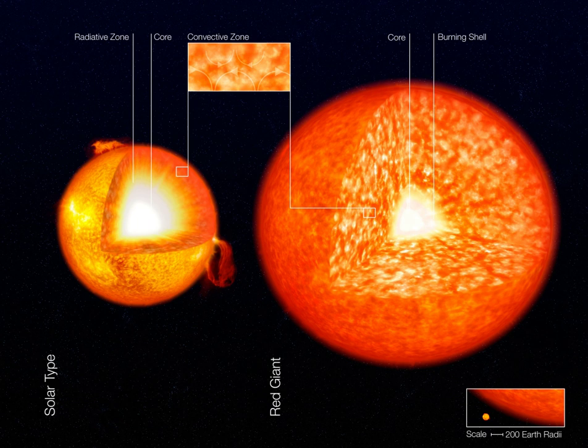The core continues to gain mass, contract, and increase in temperature, whereas there is some mass loss in the outer layers. If the star's mass on the main sequence was below approximately 0.4 solar masses, it will never reach the central temperatures necessary to fuse helium.